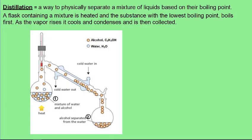Distillation is a way to physically separate a mixture of liquids based on their boiling point. We have a flask which contains the mixture and it's heated. When the substance with the lowest boiling point reaches its boiling point, it will start to boil first.